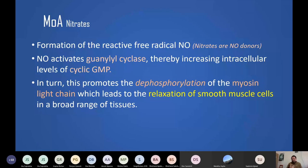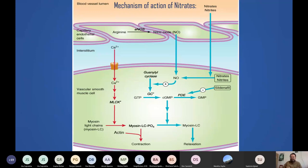Our body produces EDRF/nitric oxide from the endothelium. If you can deliver NO into the blood, it achieves vasodilation. Nitric oxide itself cannot be given externally — it cannot be absorbed and destroys itself. So nitrate drugs — mononitrate, dinitrate, trinitrate — all donate NO to the blood. NO then activates guanylyl cyclase, increasing intracellular cyclic GMP levels.